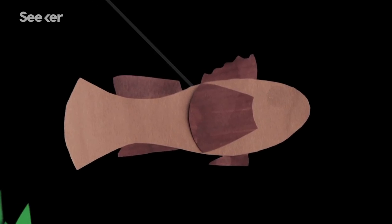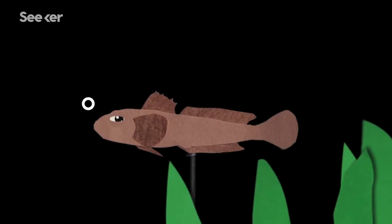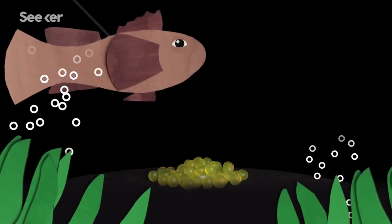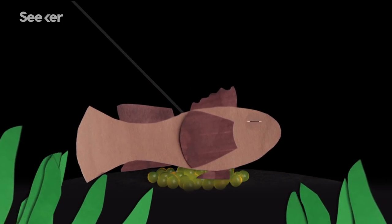The territorial males are large and strong, whereas the sneaker males are small and quick. The territorial male guards an area where a female lays her eggs, and he fertilizes them once they have been deposited.